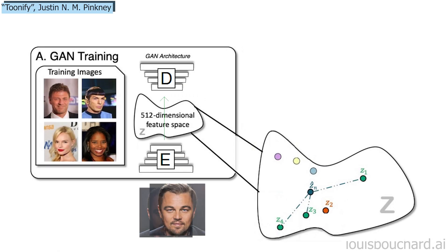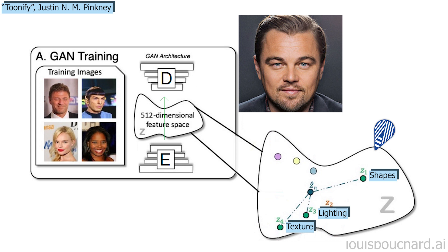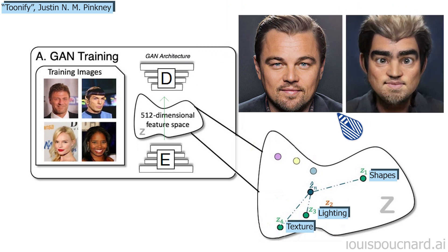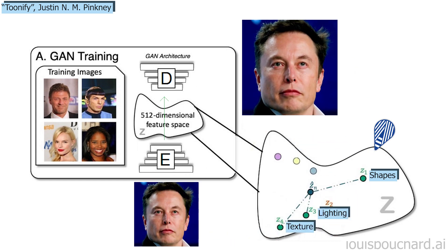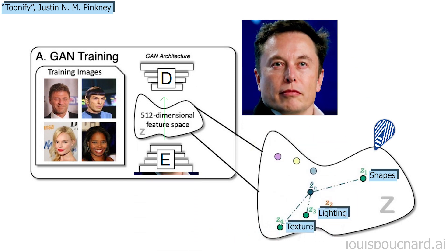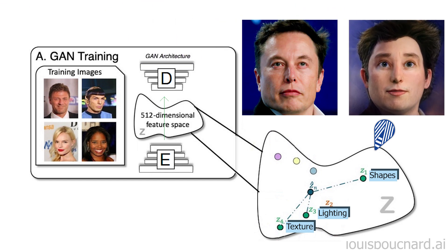This is extremely complicated as the representation in which we edit the images is not human-friendly. Instead of being regular images of three dimensions — red, green, blue — it's extremely dense in information and therefore contains hundreds of dimensions with information about all the features the image may contain. This is why understanding and localizing the features we want to change to generate a new version of the image requires so much work.